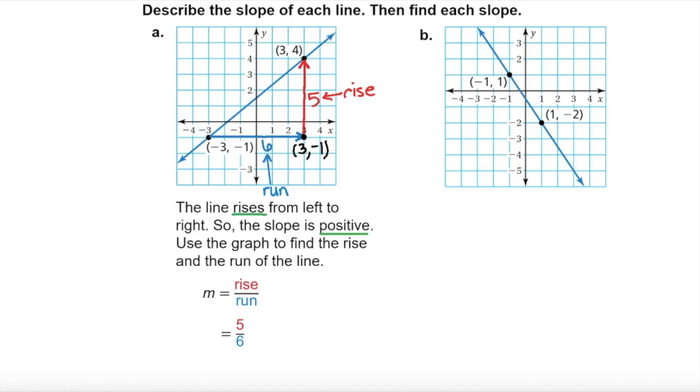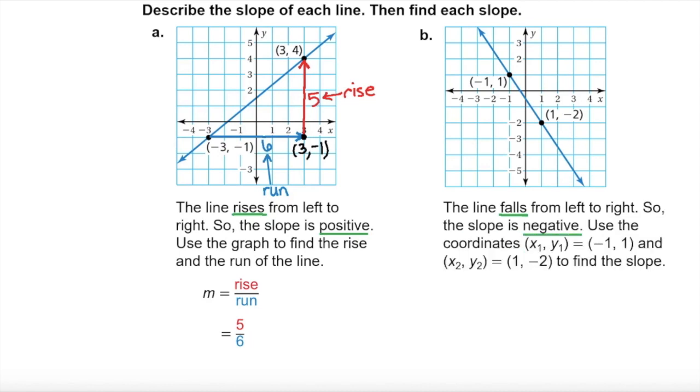Part B: The line falls from left to right, so the slope is negative. Use the coordinates x sub 1, y sub 1 equals negative 1, 1, and x sub 2, y sub 2 equals 1, negative 2 to find the slope.